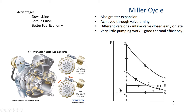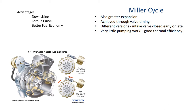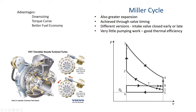So from 1 to 2, that's the compression — basically the piston goes up and compresses the air. And 2 to 3 is the ignition stroke. Then 3 to 4 is the cylinder being pushed downwards to generate torque.